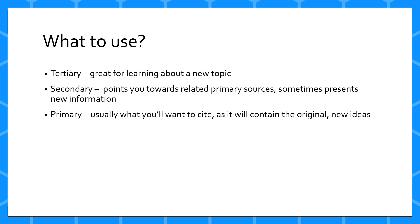Should you use primary, secondary, or tertiary sources in your research? All three can be helpful. If you don't know much about your topic, tertiary sources are a great starting point to learn the basics and the vocabulary that will help you find appropriate primary and secondary sources. Finding a secondary review article on your topic will do a lot of the background research for you and point you to the primary articles you want to examine in further detail.